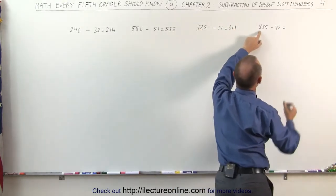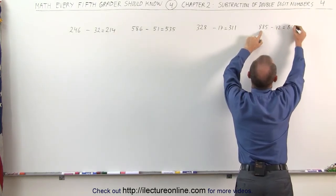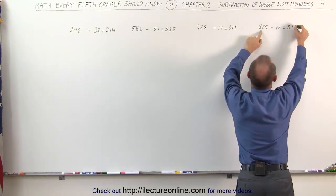And over here, the 8 remains. 7 subtracted from 8 gives me 1, 2 subtracted from 5 gives me 3.